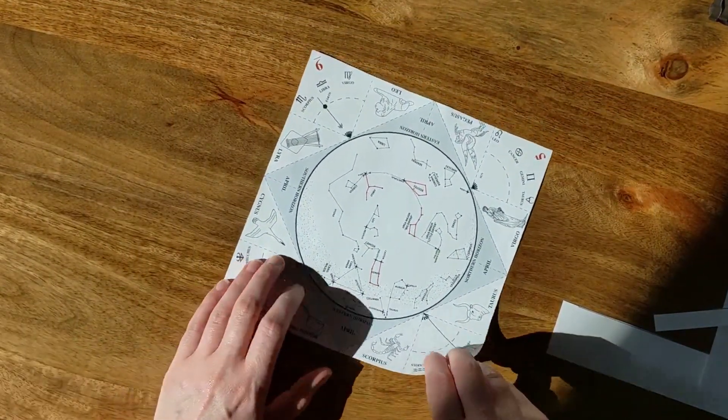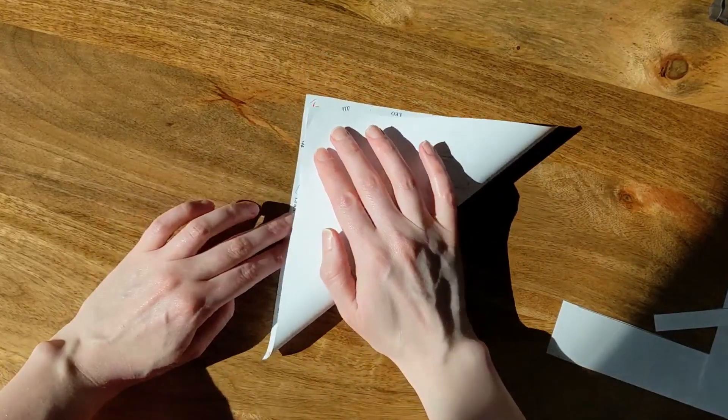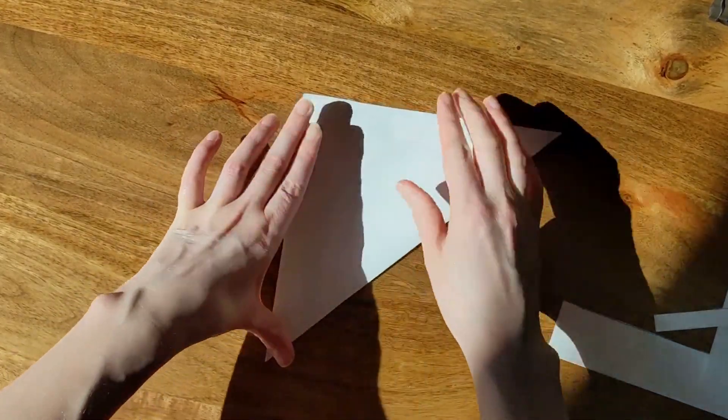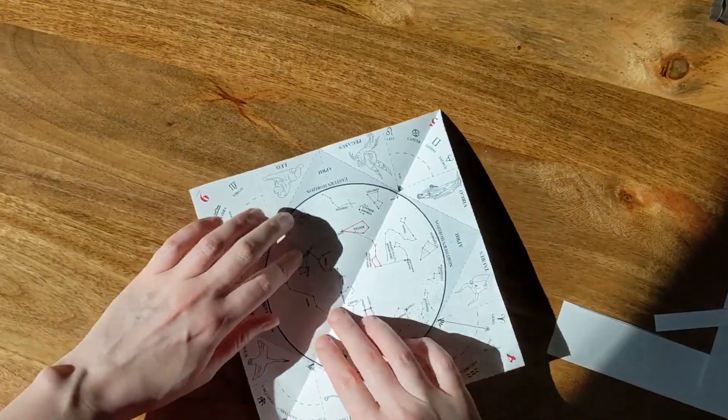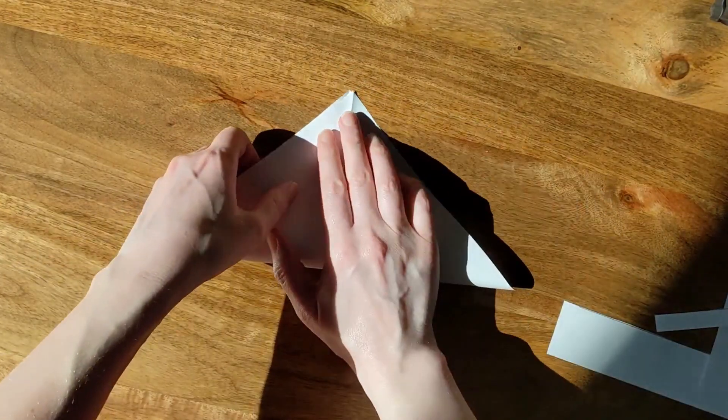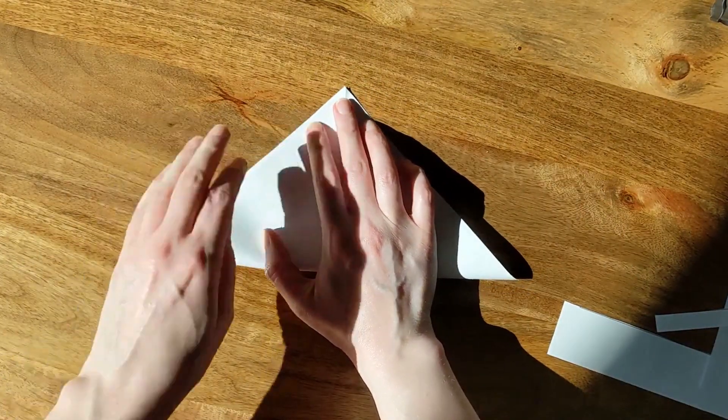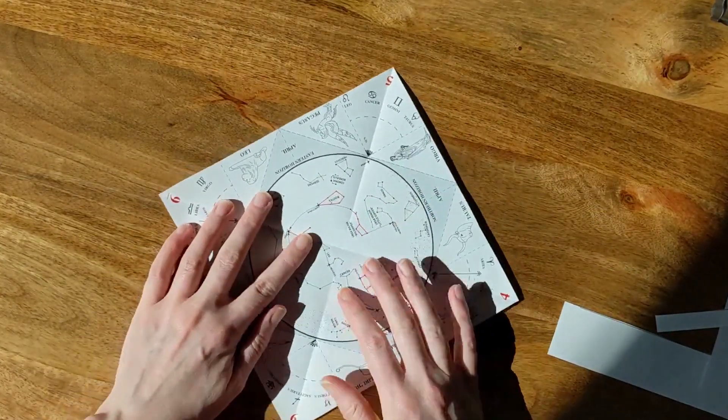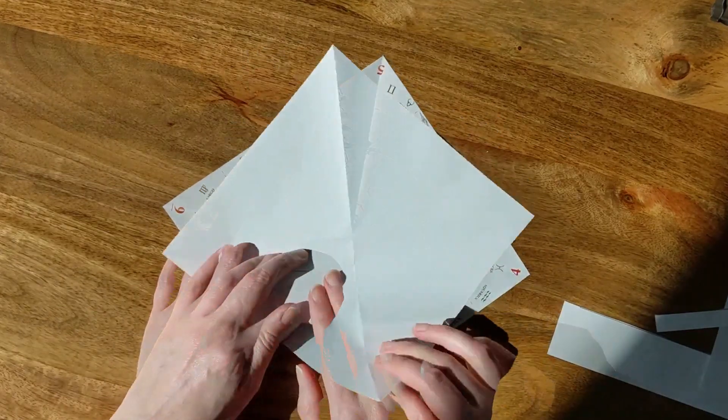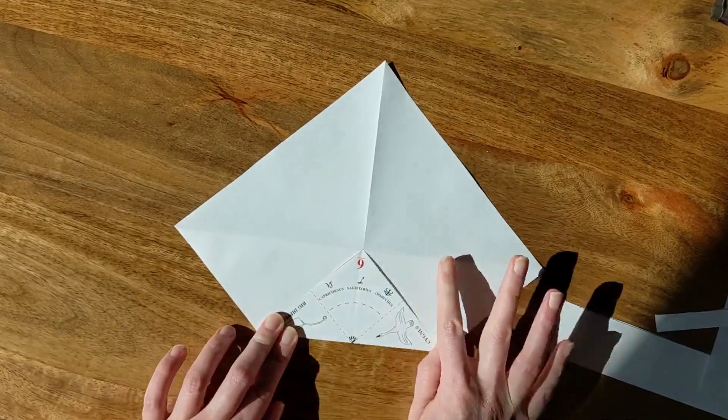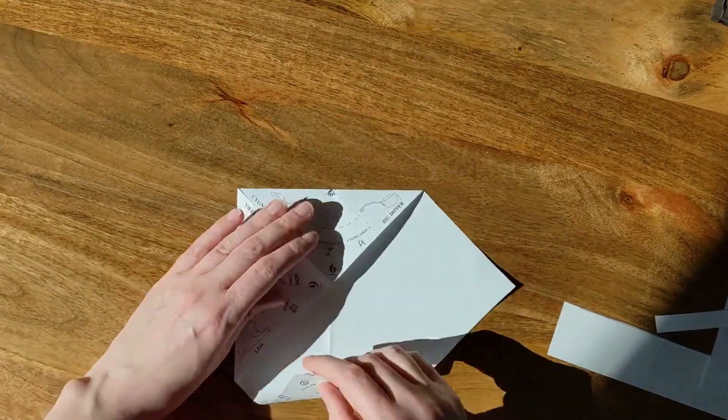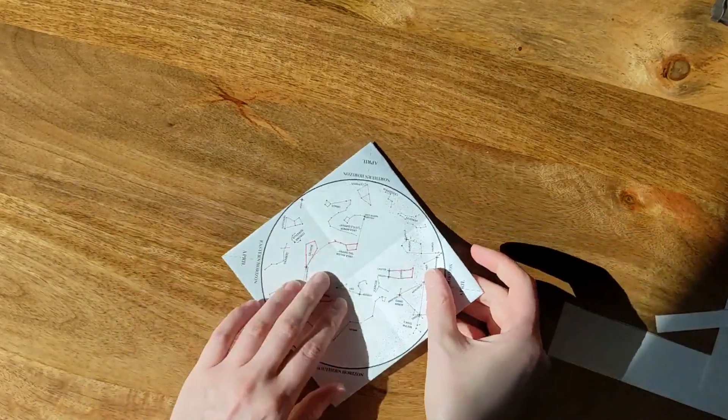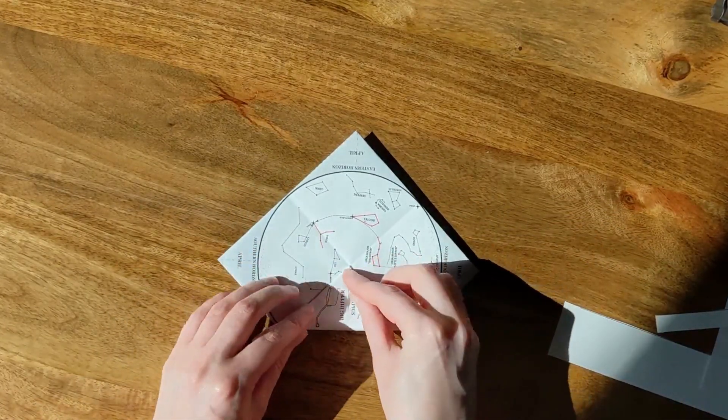So now you're just going to fold it diagonally, so corner to corner. Turn that up and corner to corner. There we go. Now fold each corner into the middle. So flip it over and fold into the corner, into the center again.